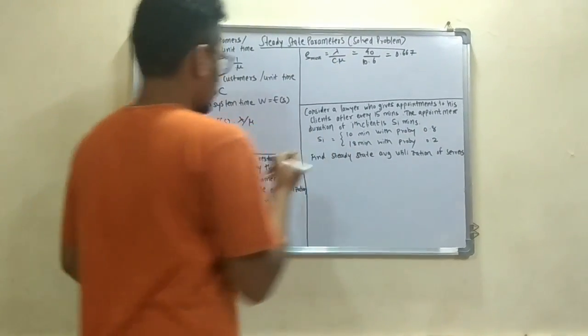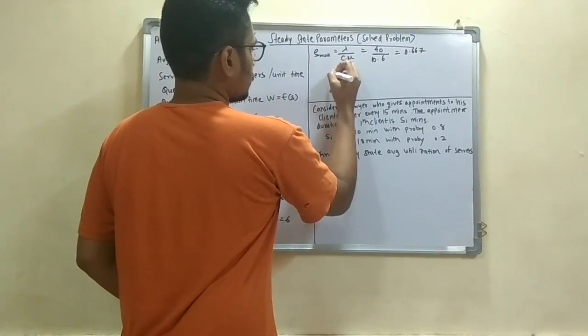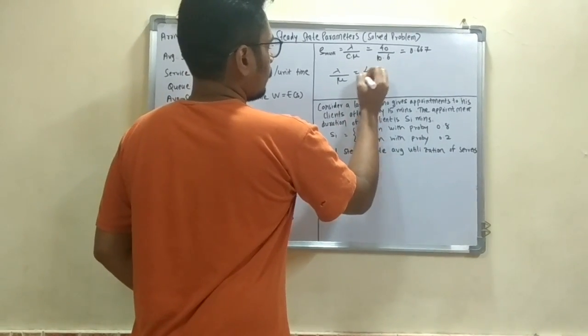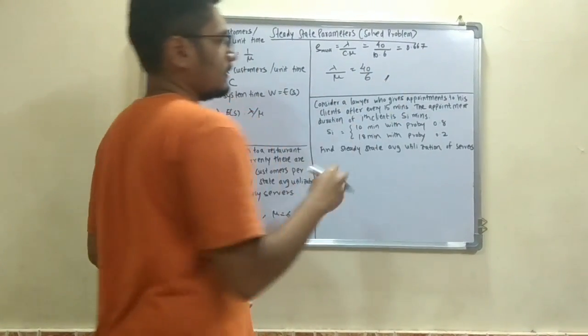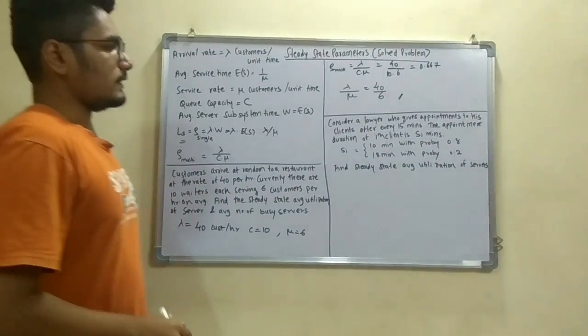Now this is the LS, that is the steady state parameter. Now you have to find the total number of busy servers in this case. So the busy servers are denoted as lambda by mu, so it would be 40 by 6. So just keep the value as it is and it would be some answer in decimals. So this was the very first problem in solving this.